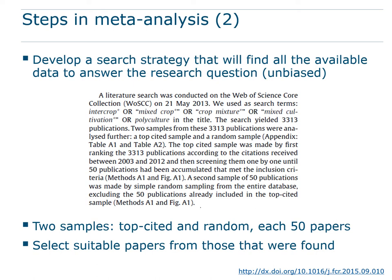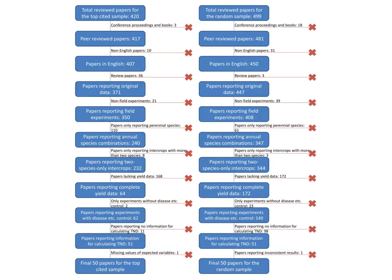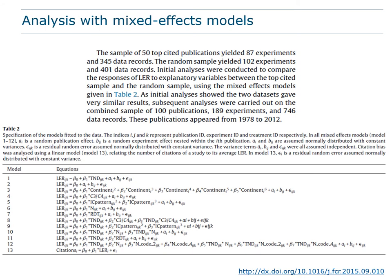Yu Yang first analyzed the most highly cited papers — clearly a biased sample — and then took a random sample from the 3,000 papers. From each sample he selected papers until he had a sample of 50. The selection process is illustrated in what's called a PRISMA diagram. For the top-cited sample, he started with 420 papers, then excluded conference proceedings, books, non-English papers, review papers, non-field experiments, papers only reporting perennial species, and so on.